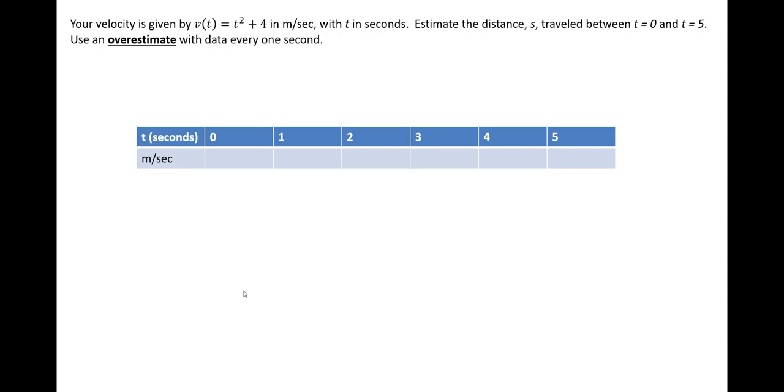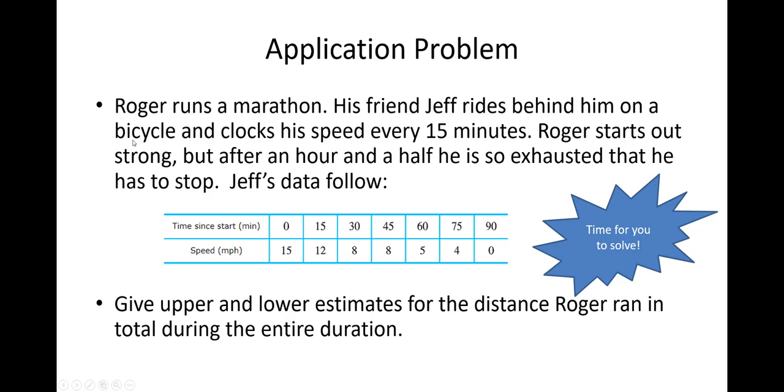All right. So now you're ready, right? Are you ready? I hope you're ready. I want you to solve this one. It says, Roger runs a marathon. Way to go, Roger. His friend Jeff rides behind him, social distancing, of course, on a bicycle and clocks his speed every 15 minutes. Roger starts out strong. But after an hour and a half, he is so exhausted that he has to stop. And so we have this data.